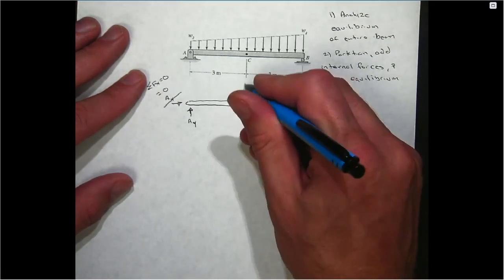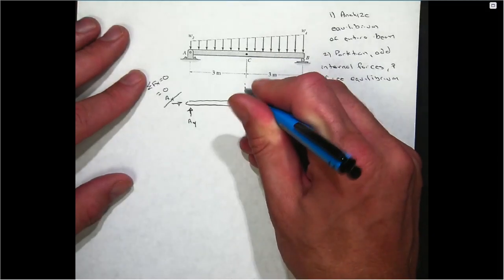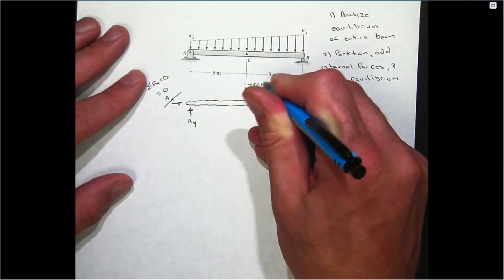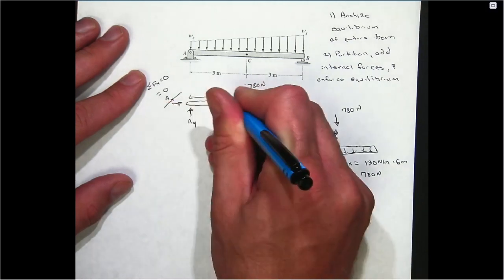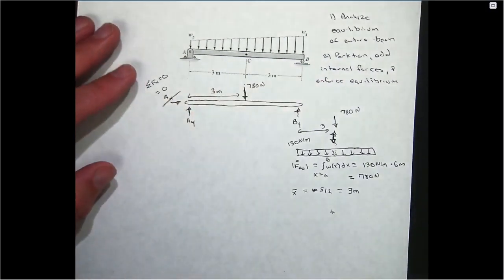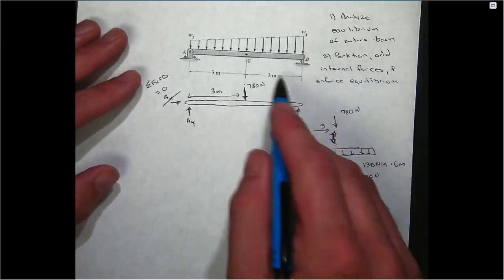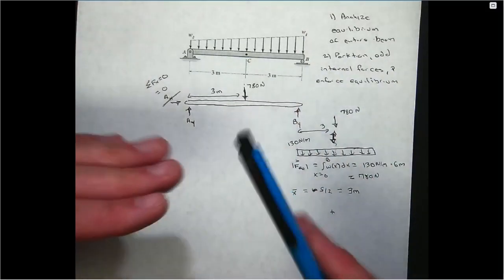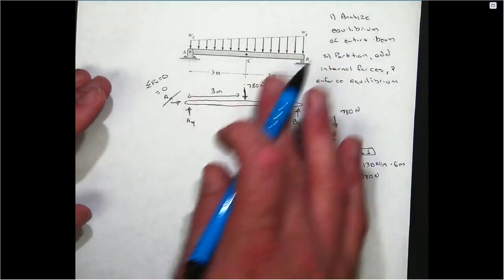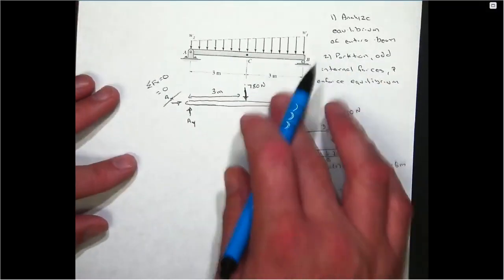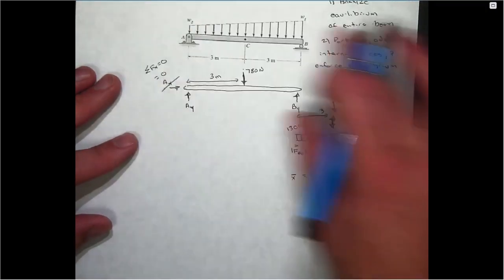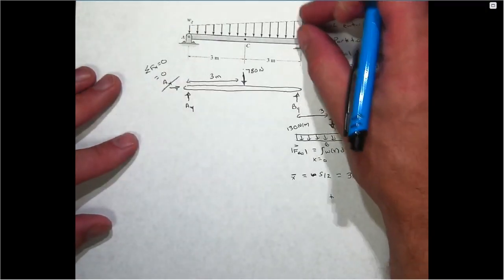What that means is that I would get the same effect if I loaded this beam by this distributed load or this is equivalent to a single load of 780 newtons applied right at the middle. So in my modeling, I can draw in a 780 newton load applied right at the middle. I'll show one of the spans on the left, and you'll see why I did that in a minute. I know I still have to deal with the triangular part.